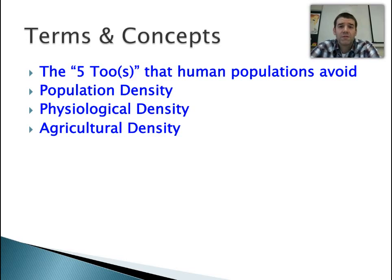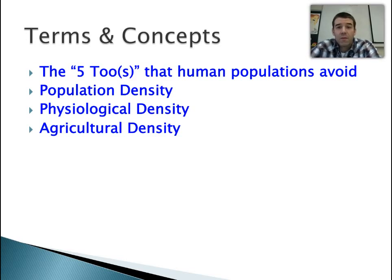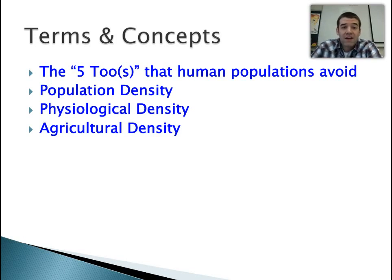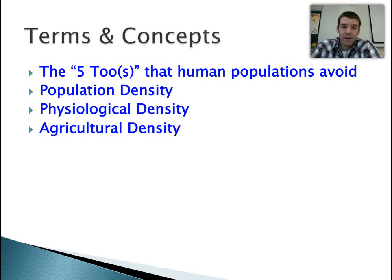In terms of concepts, we're going to talk about the five twos that human populations generally avoid. We're going to look at population density, physiological density, and agricultural density.